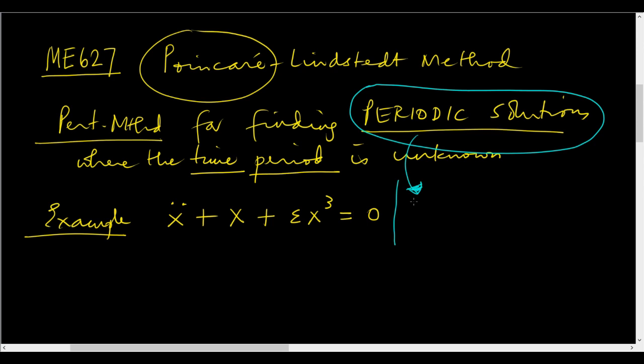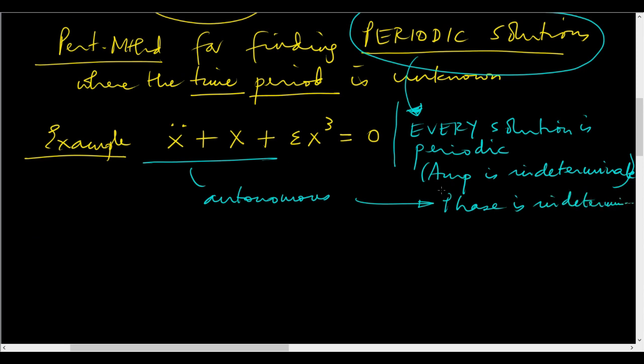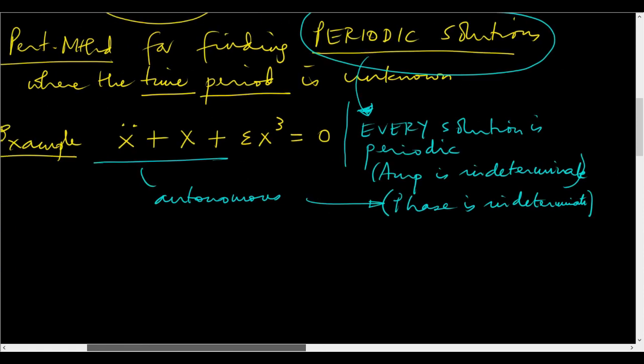So for this system, every solution is periodic. What does this mean? This means the amplitude is indeterminate. This is an autonomous system. Indeterminate.